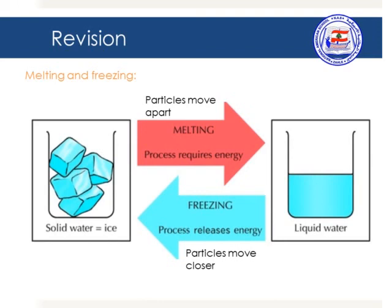The last topic we covered is melting and freezing — two changes in the states of matter. Melting is the change from solid to liquid, and freezing is the change from liquid to solid. When melting takes place, the solid absorbs or gains energy so that the particles can move apart. In freezing, a liquid loses or releases energy, becomes colder, the particles move closer together, and it transforms into a solid.